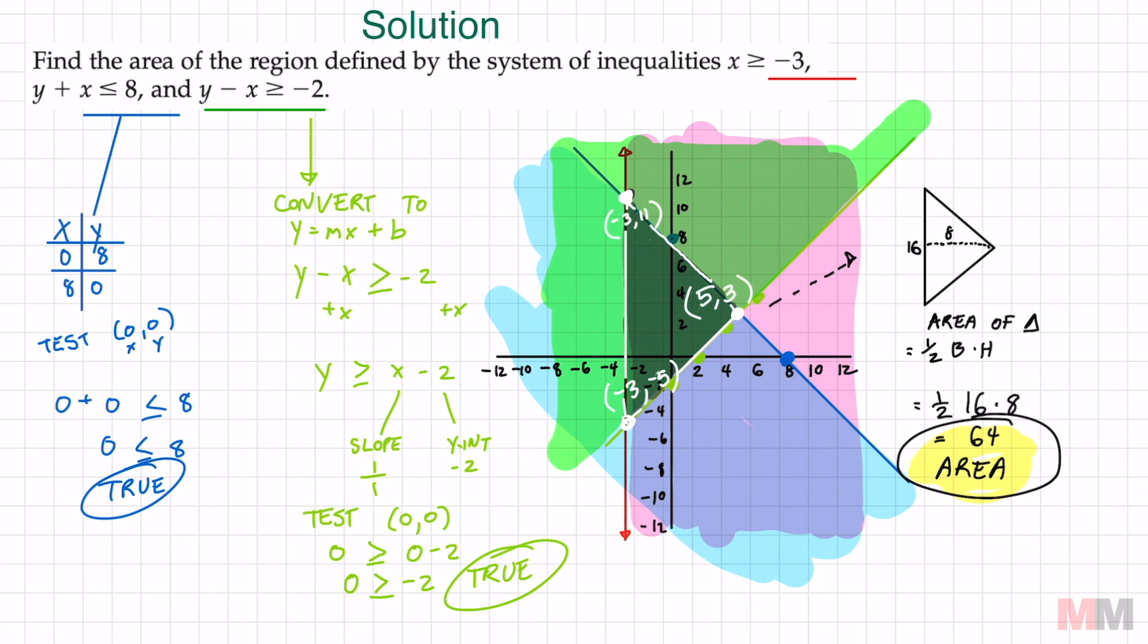Once you graph all three of those inequalities it's going to have a section that they all have in common which forms a triangle. I redrew it right here.